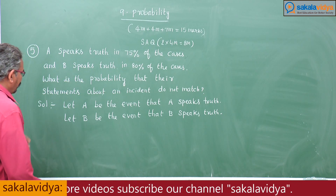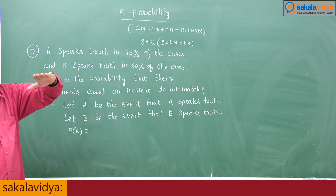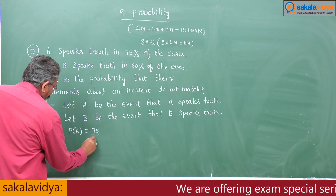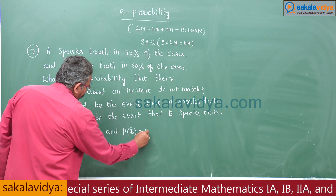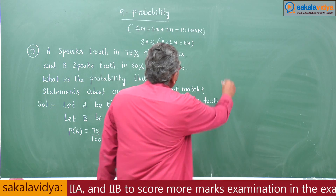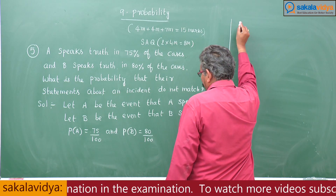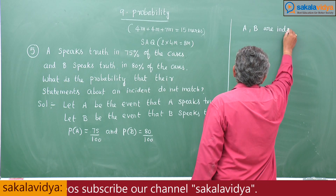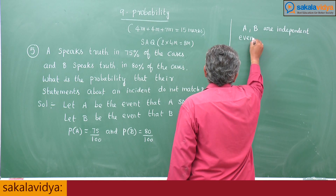Let B be the event that B speaks truth about the same incident. What is given here? P of A — 75% means 75 by 100. P of B — 80% means 80 by 100. Also, A and B are independent events because they do not depend on each other.